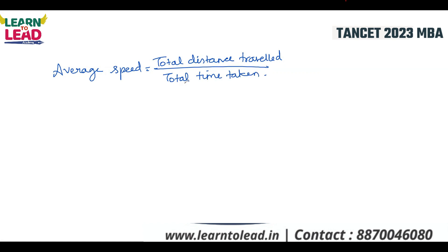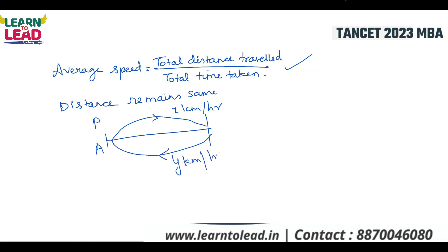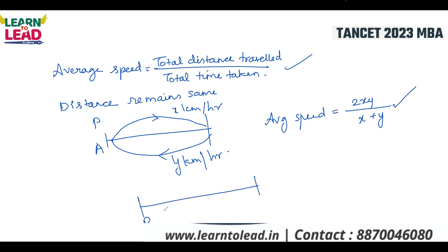When distance remains the same, we go into the round trip problem. Suppose a person travels from A to B at x km per hour and returns at y km per hour. The average speed formula is 2xy divided by (x plus y). Similarly, in a journey between P and Q, if the first half of distance is covered at x km per hour and the next half at y km per hour, the average speed is 2xy by (x plus y).